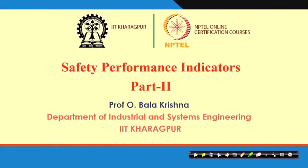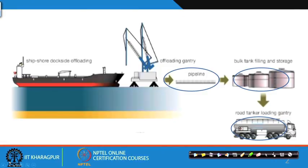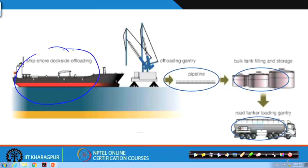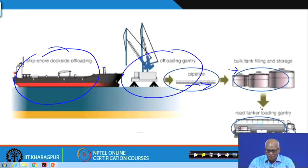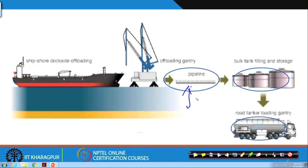Hello viewers. Last class we talked about safety performance indicators. This class is a continuation of what we discussed last time. We were discussing the case study of an offshore dockside where ships bring material to the offloading gantry. From there it is offloaded through pipeline, goes to bulk tanks, from bulk tank it goes to road tanker. We have identified three hazardous scenarios: pipeline, bulk tankers, and road tanker.